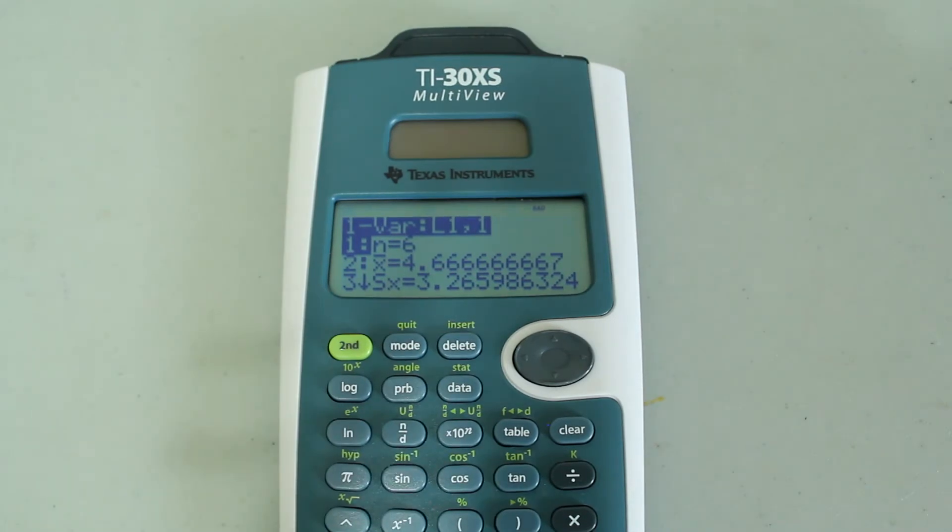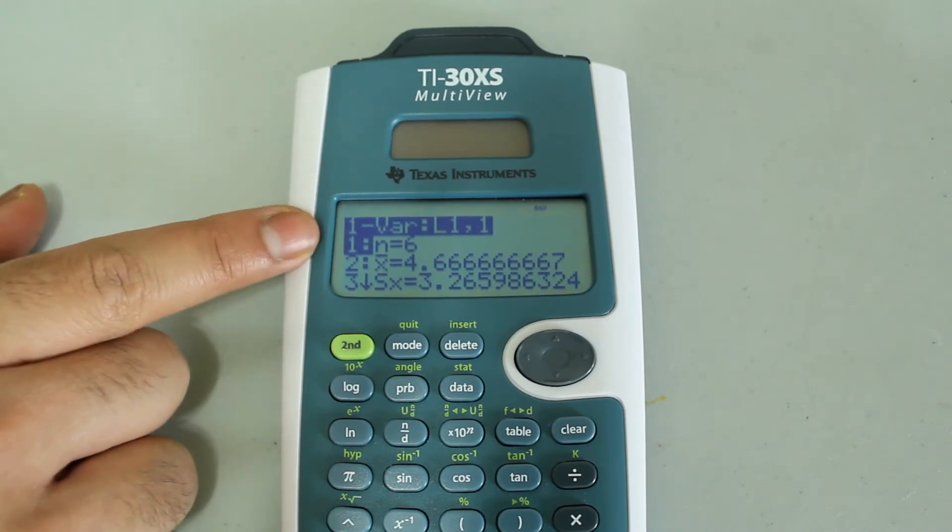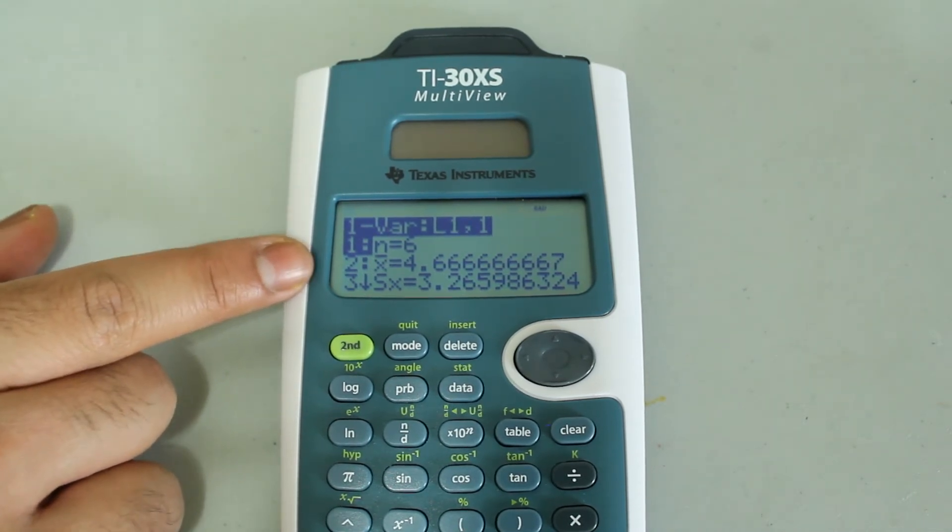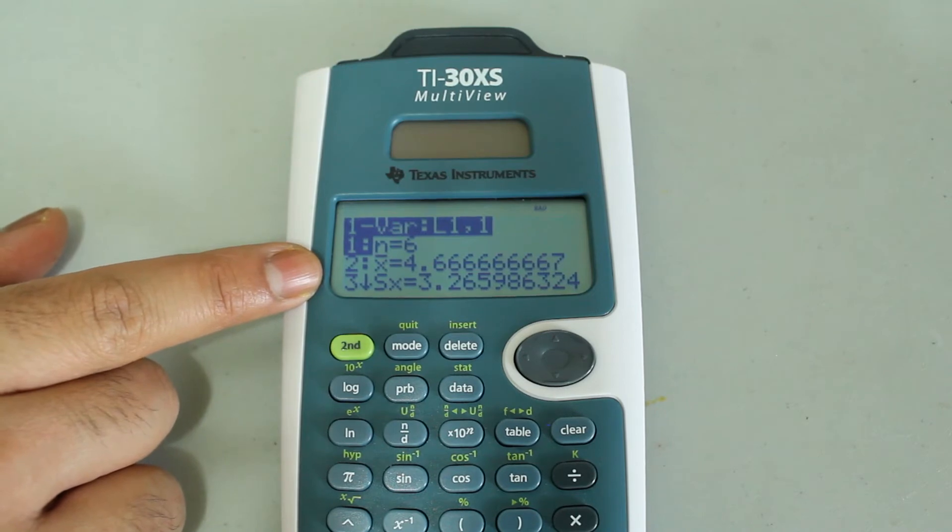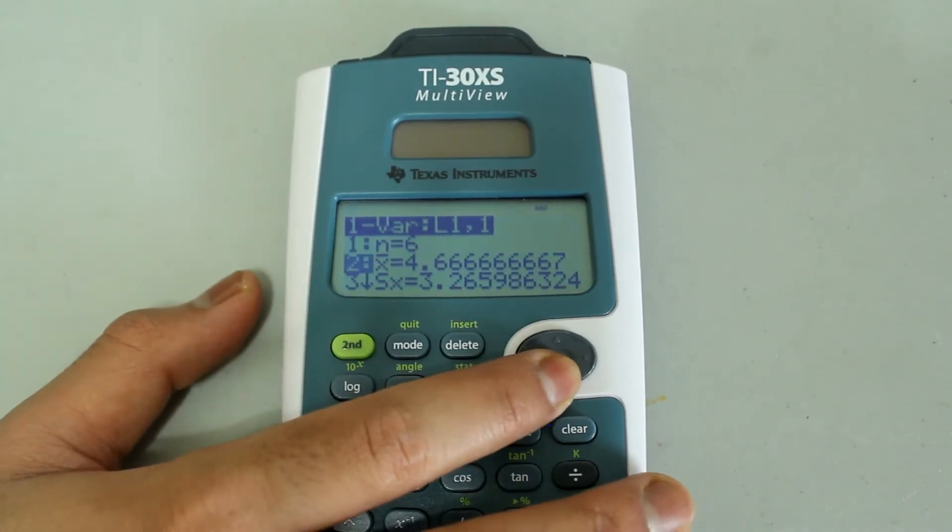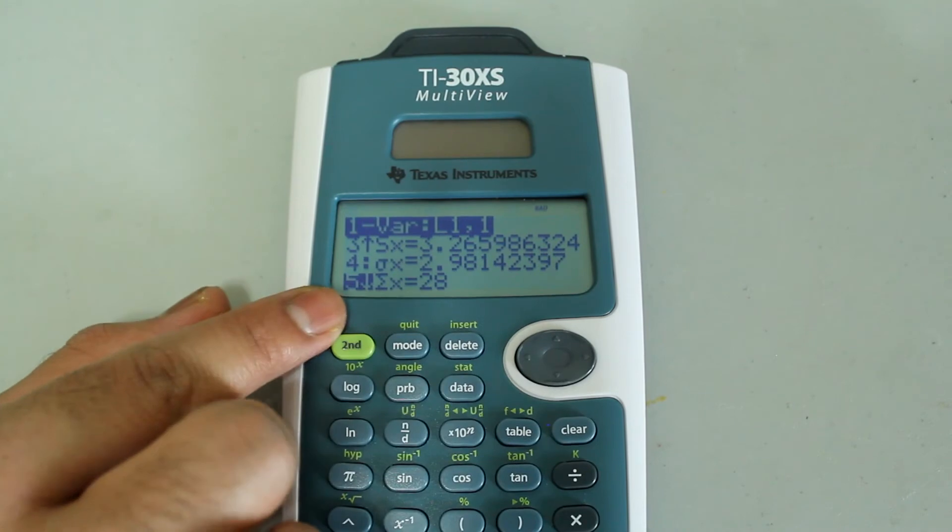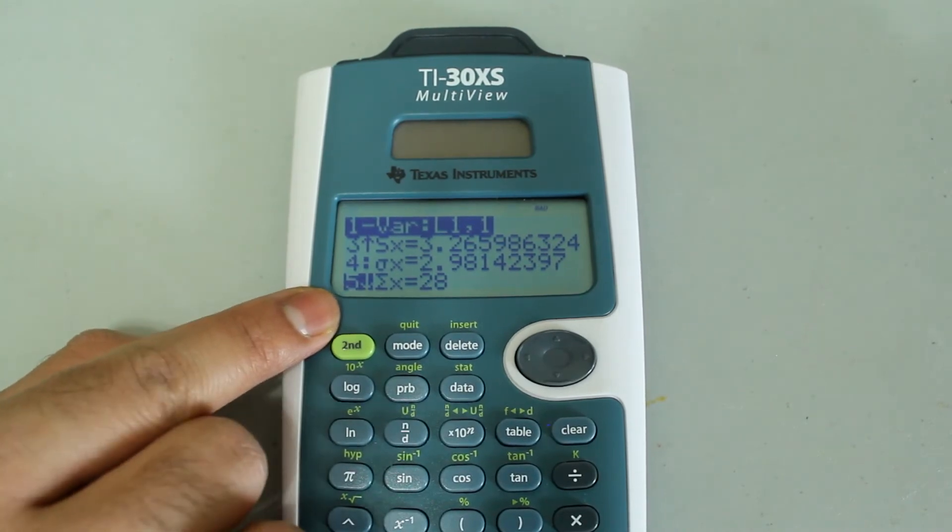This gives us all the information that we need to know. First, the n value tells us how many pieces of data we entered, which is 6. And then we have the arithmetic mean, followed by the sample standard deviation, and afterwards we have the population standard deviation, and then we have the sum of all the data points, followed by the sum of the squares of all the data points.